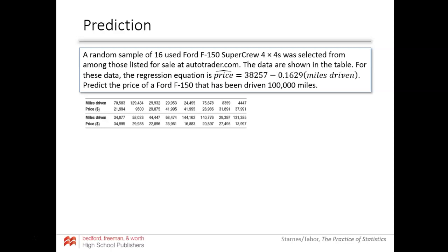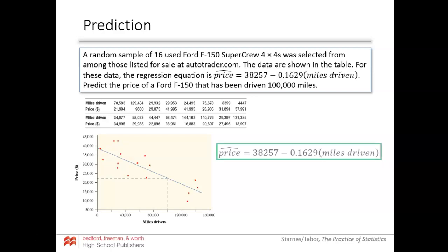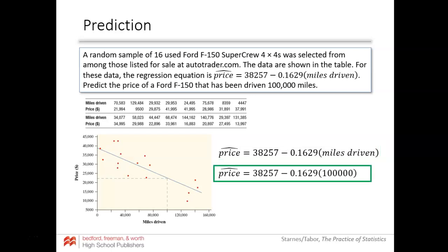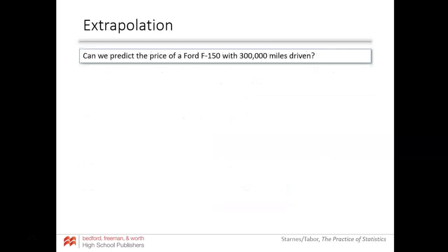Logic tells me that makes sense — the higher the mileage, usually the price goes down on the vehicle. They want us to predict the price of the Ford F-150 if it's been driven 100,000 miles. Using our prediction line, we substitute 100,000 miles into the equation. The predicted price for that truck would be $21,967 based on our data and regression line.